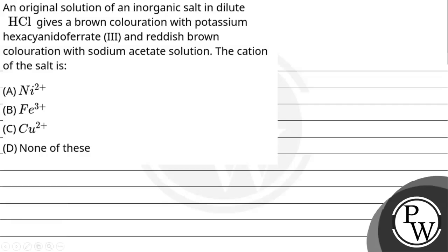Hello, let's read this question. The question says an original solution of an organic salt in dilute HCl gives brown coloration with potassium hexacyanoferrate III and reddish brown coloration with sodium acetate solution. The cation of the salt is?